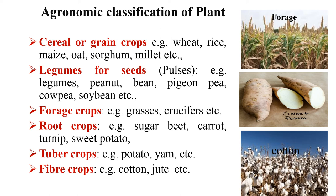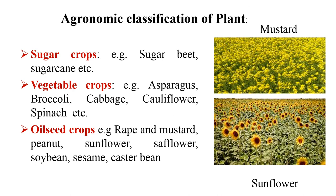Fiber crops are crops grown for their fiber, used in making textiles such as rope and rugs; examples include cotton and jute. Sugar crops are grown for their sugar content; examples are sugarcane and sugar beet. Vegetable crops are grown for their edible leaves, shoots, flowers, fruits, and seeds; examples include broccoli, cabbage, cauliflower, and spinach. Oil seed crops are grown for the purpose of extracting oil from their seeds; examples are mustard, peanuts, sunflower, safflower, and soybean.